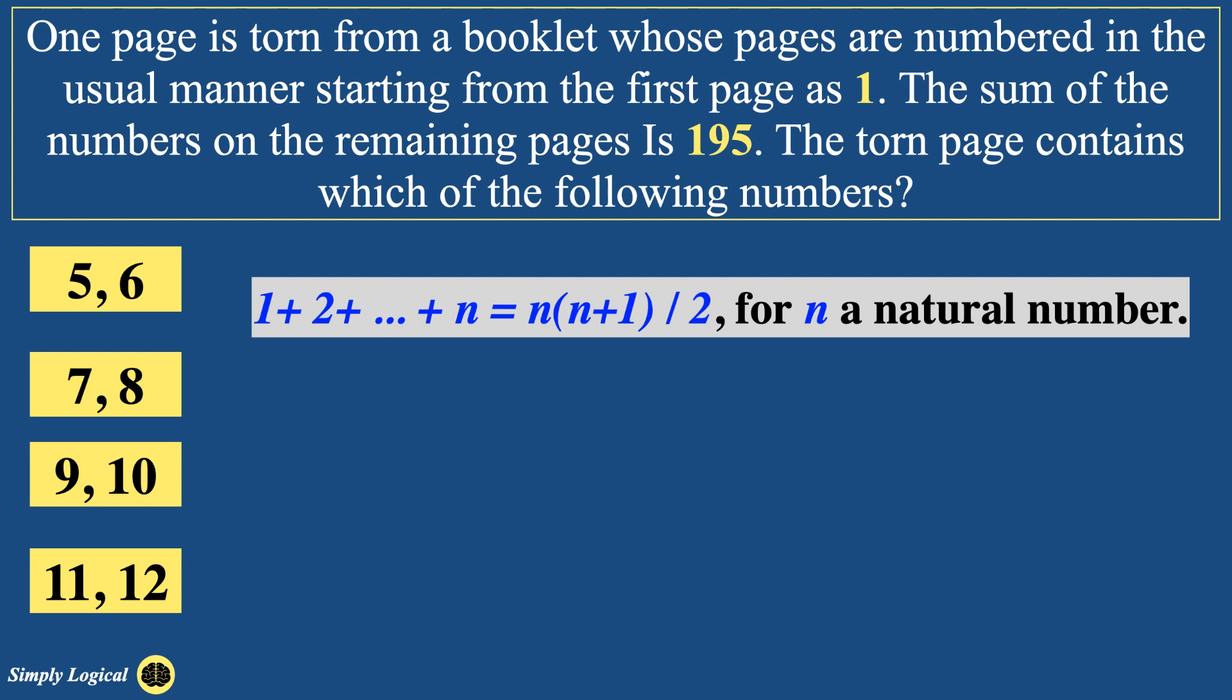For example, sum of first 10 natural numbers is calculated like this: 10 into 10 plus 1 divided by 2, which results in 55. In this case, n equals 10. Let's come back to the problem.